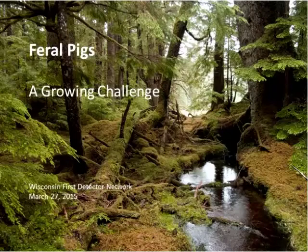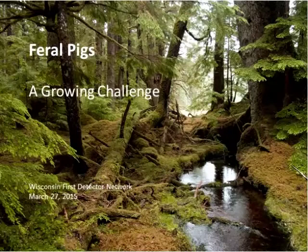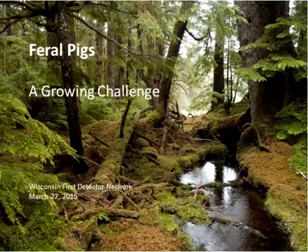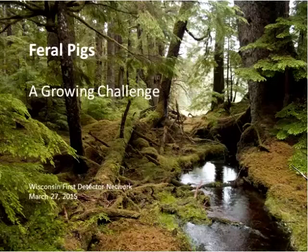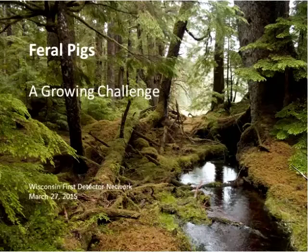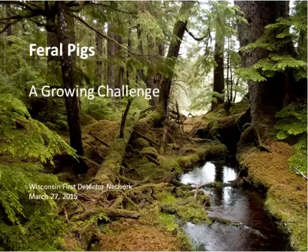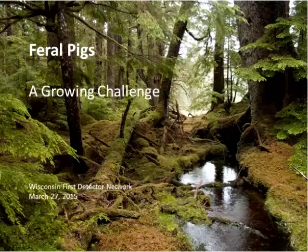I'd like to show this picture at the beginning — it's a beautiful scenic picture of a Wisconsin location. I put that up there to illustrate what's at risk here: the cool clear water, stable shorelines, vegetated riparian corridor. These are resources we could lose if we have feral pig populations. Through this presentation we'll show different types of damage, different risks, and what we're doing in Wisconsin and nationally to abate the issue.